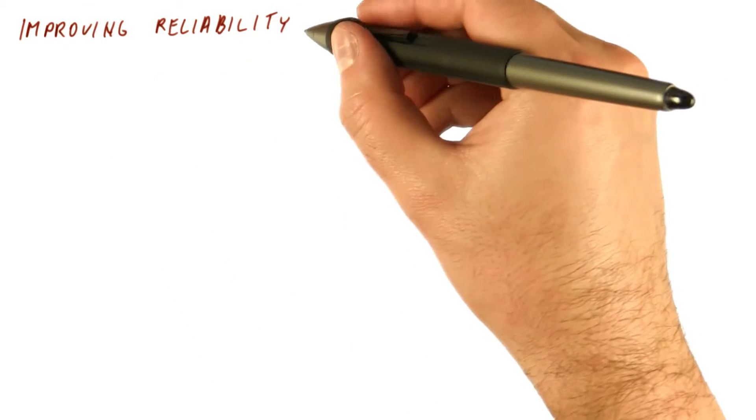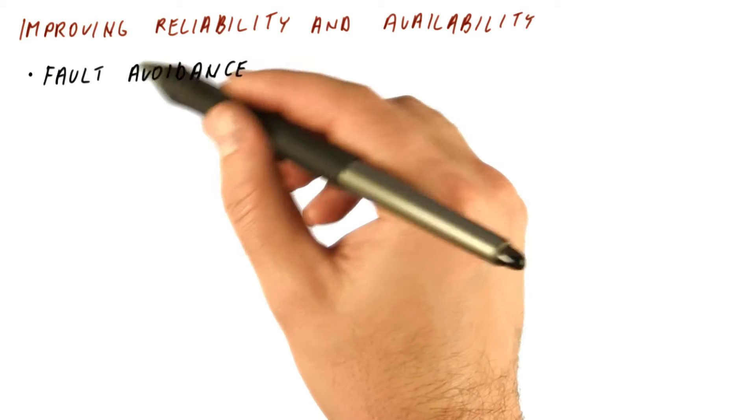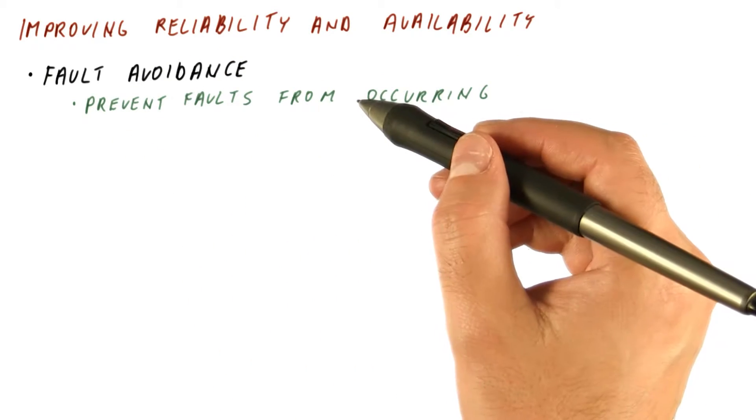So how do we improve reliability and availability? We can try to avoid faults, which is about preventing faults from occurring in the first place.